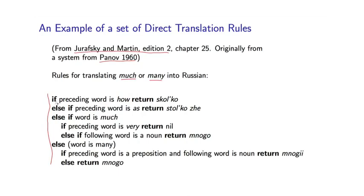So these rules say that if the preceding word is how, so if you have how much, then you would translate one way. On the other hand, if the preceding word is as, so as much, you might translate a different way. Otherwise, if the word is much rather than many, you would go into some other rules, and so on and so on.